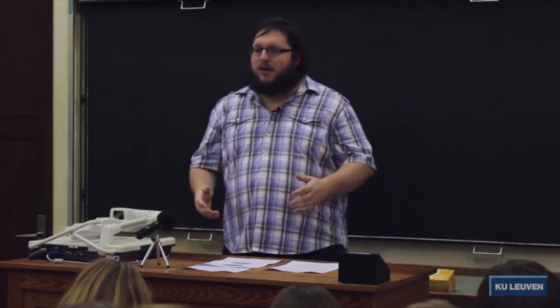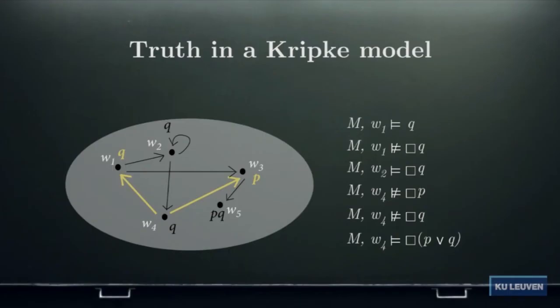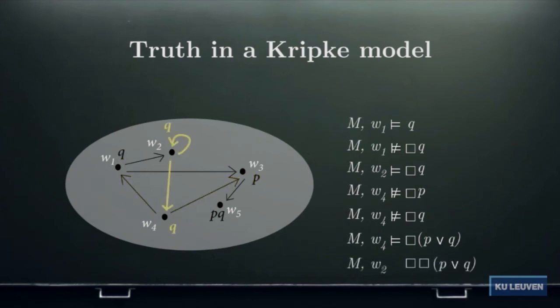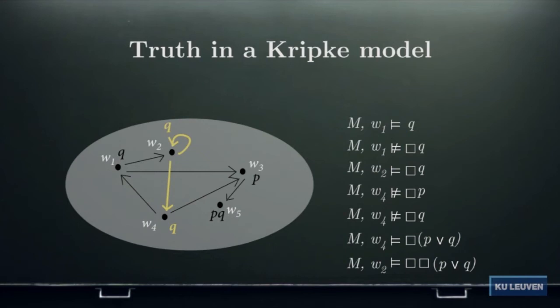You can go even further. For example, is the formula box box(P or Q) — 'it is necessary that it is necessary that P or Q' — true at W2? You check whether box(P or Q) is true at all worlds seen by W2, namely W2 and W4. We already checked that it's true at W4, and it's also true at W2 itself. So box box(P or Q) is true at W2.